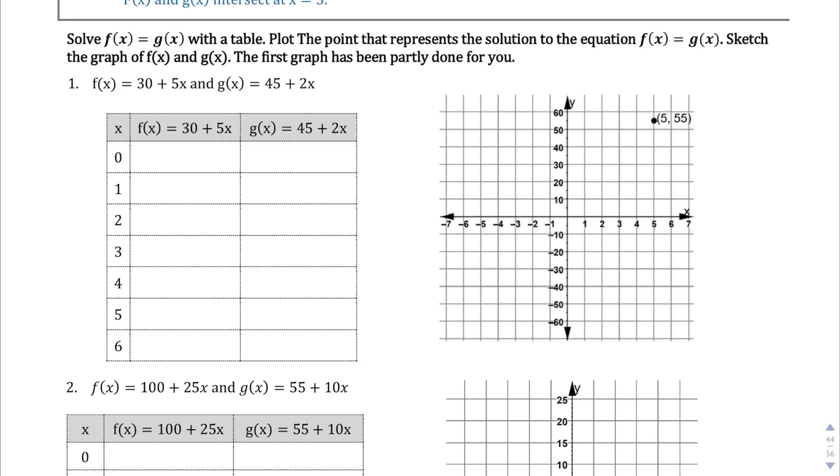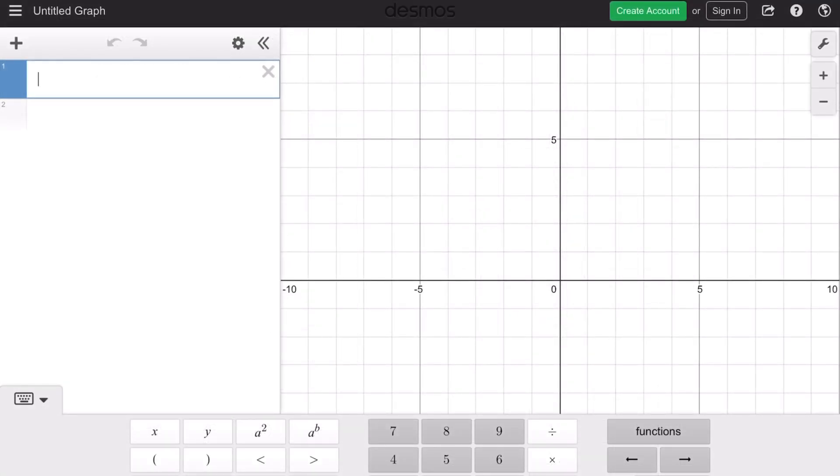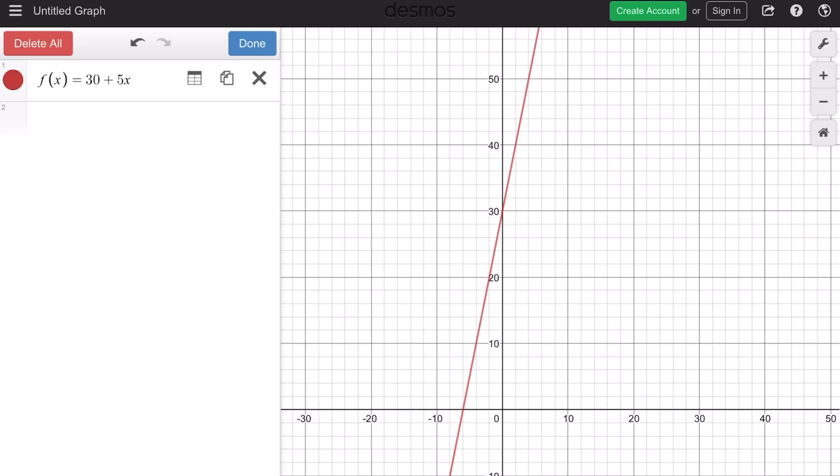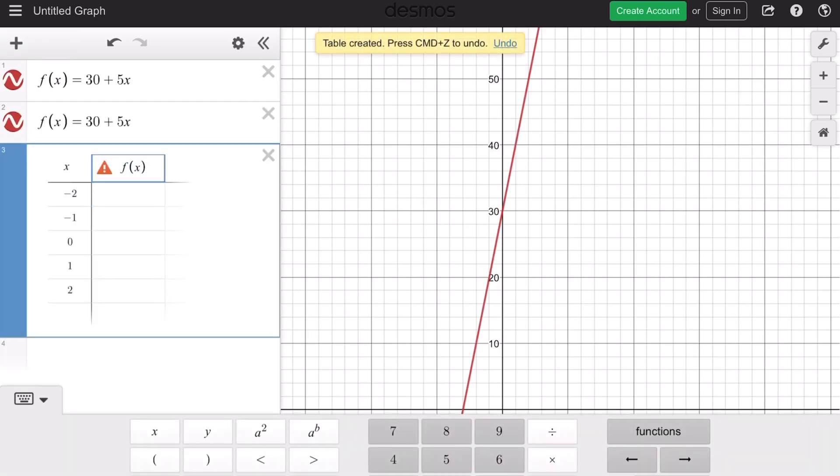So let's jump into question number one, and we have the domain values right here, the x values right there, 0 through 6. And let's find out what the range values are going to be for f(x) and g(x). Okay, so we'll jump straight into Desmos, and let's just write f(x) as it is. So f(x) equals 30 plus 5x.